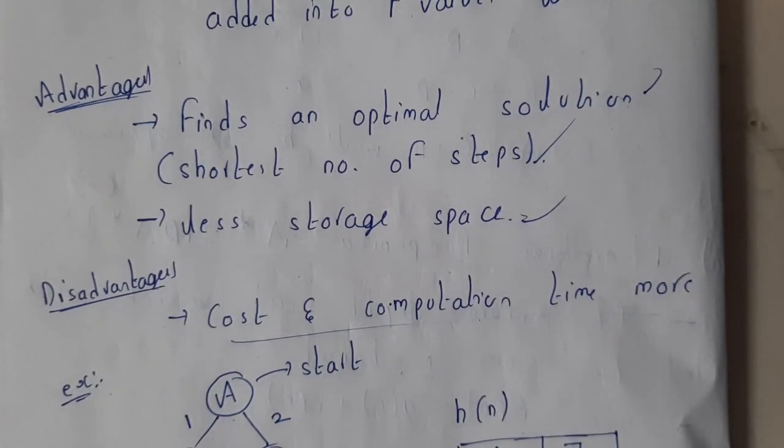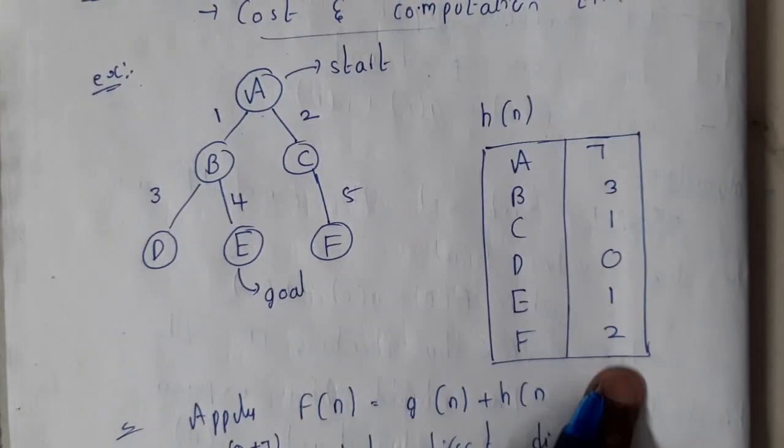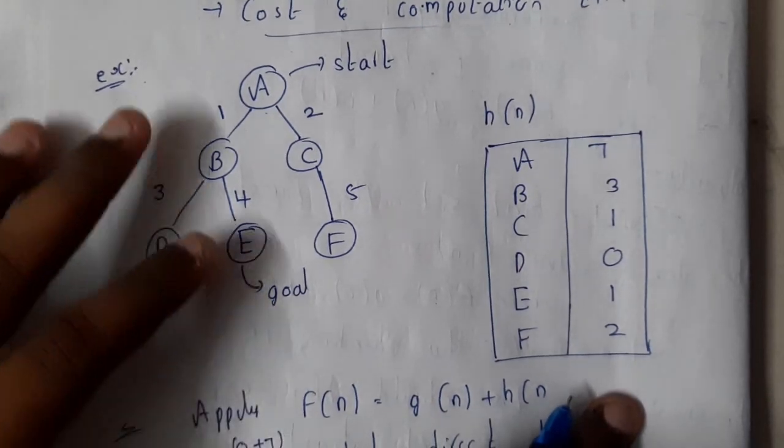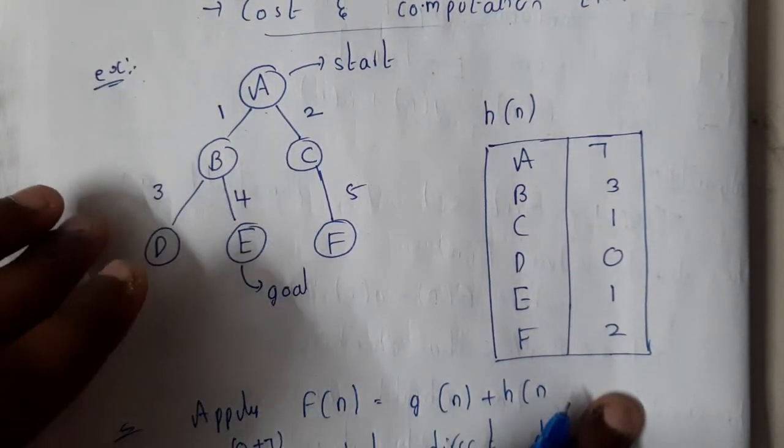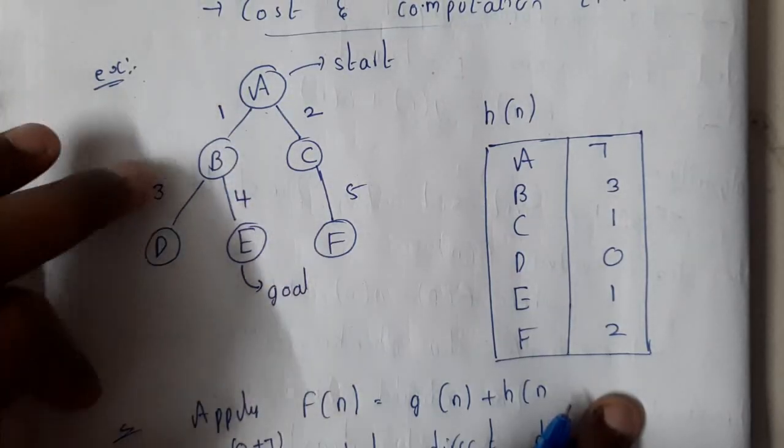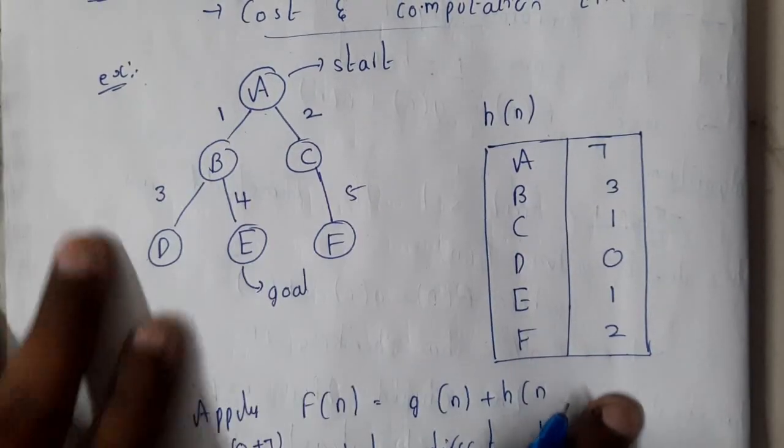Okay, so let us take a small example. This is the given question and this is the heuristic table. So in our previous lecture we have solved it step by step like A to B and A to C, A to B to D, sorry B to, sorry A to B to D, and A to B to E or A to C to F. So in that way we solved step by step, right?